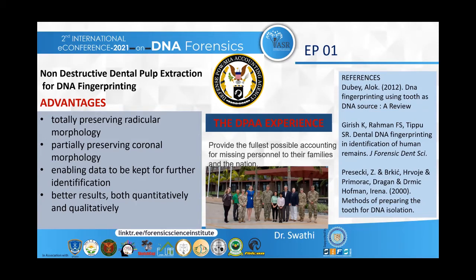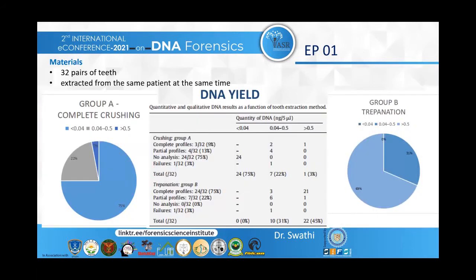The inclusion criteria for these teeth were that the teeth are mature and living, verified by pulp vitality test, that the teeth are non-distorted and extracted only for orthodontic, periodontic, or prosthodontic reasons, and not as a treatment option.